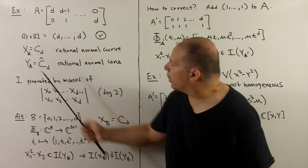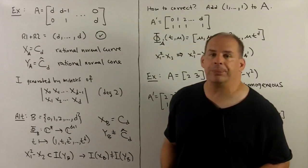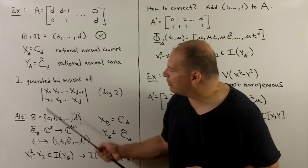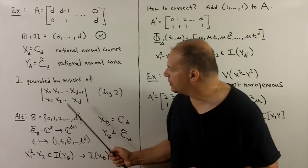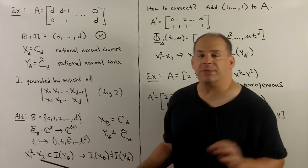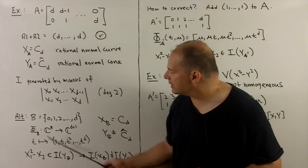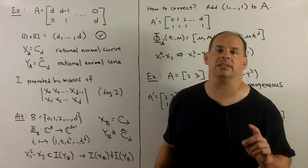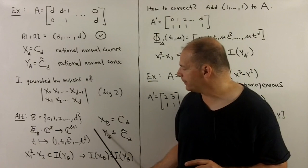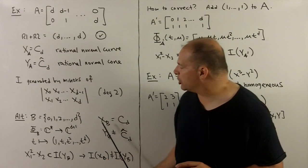Now, another approach to this that requires correction. Let's instead take for our characters generated by B equals (0,1,2,...,d). So phi sub b is going to carry C star to C to d plus 1. The t goes to (1,t,t squared,...,t to the d).